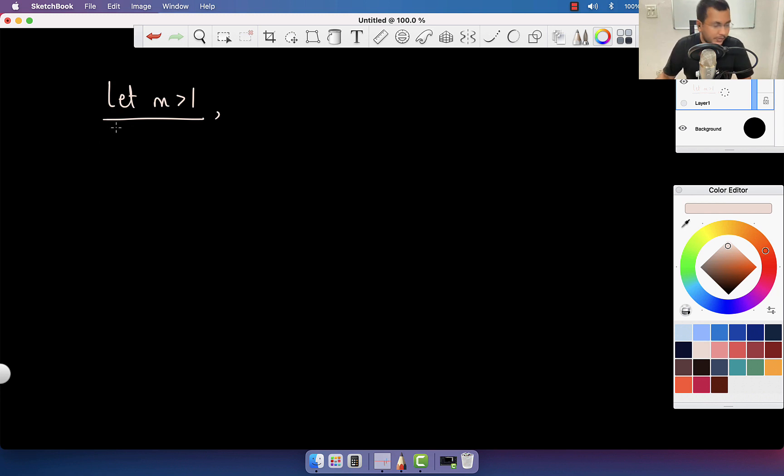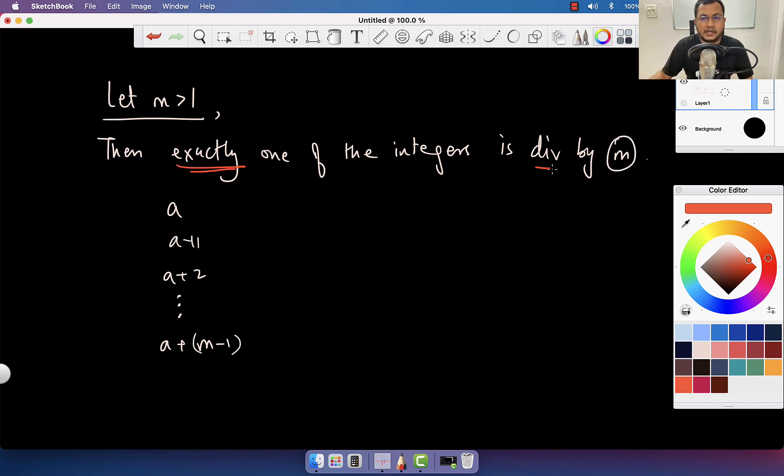So, we will semi-repeat also. Think. Question is, then exactly one of the integers. One of the integers. And let me write those integers. The integers are a, a plus 1, a plus 2, dot dot dot, a plus m minus 1. One of these integers is divisible by m. Is divisible by m. Exactly what we have done. How do you prove that? How do you justify that?